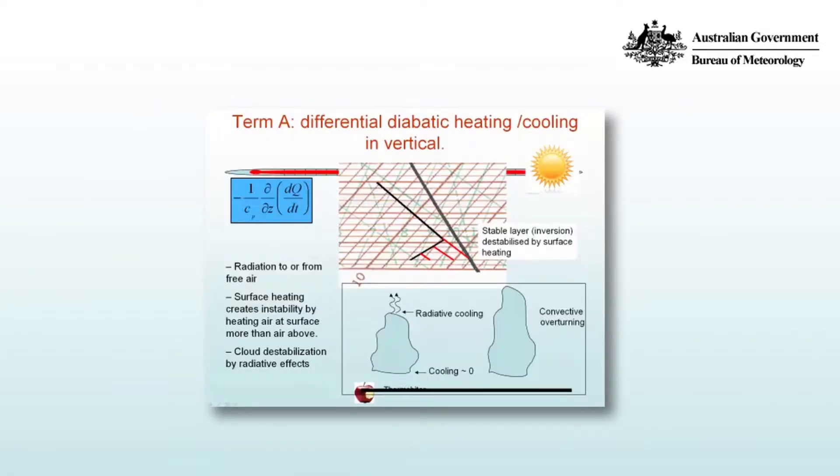Term A in the lapse rate equation represents differential heating or cooling in the vertical due to diabatic processes. So dγ/dt is equal to -1/Cp * d/dz(dq/dt). Let's consider a couple of examples to make sense of that.